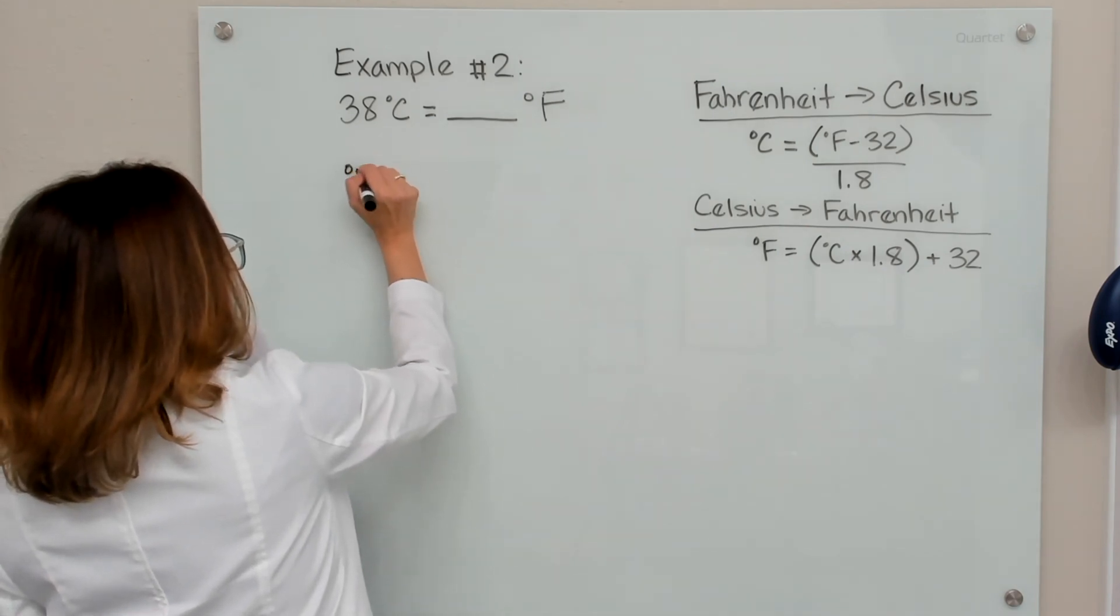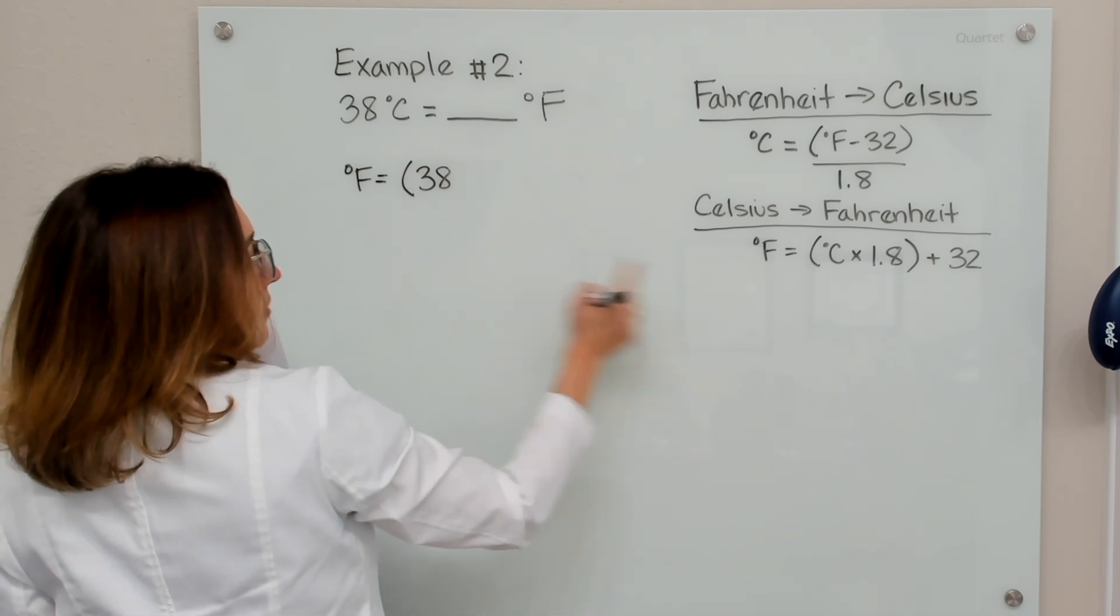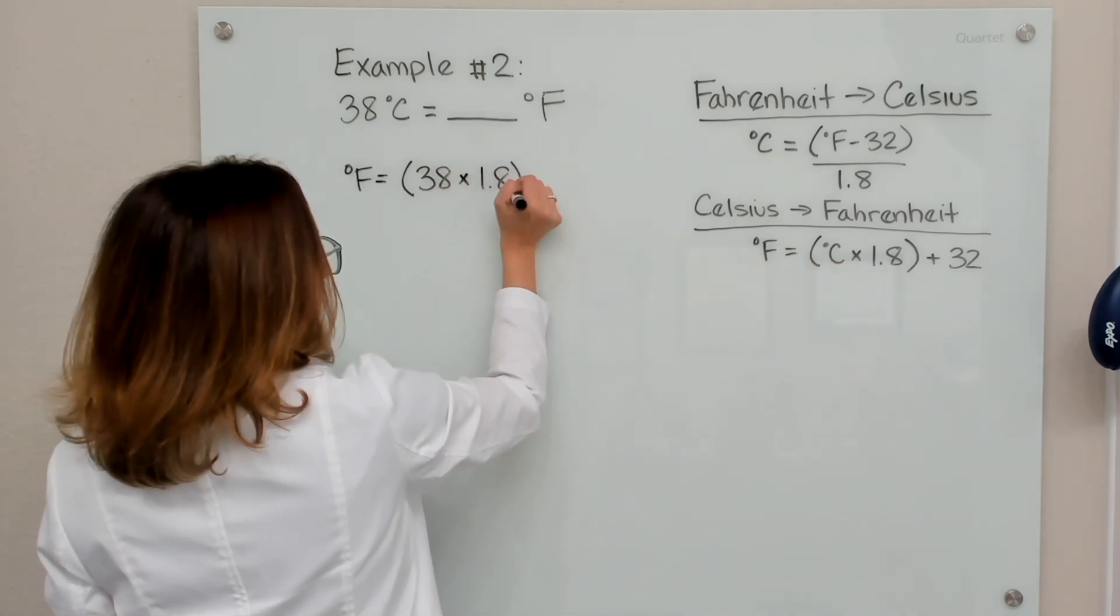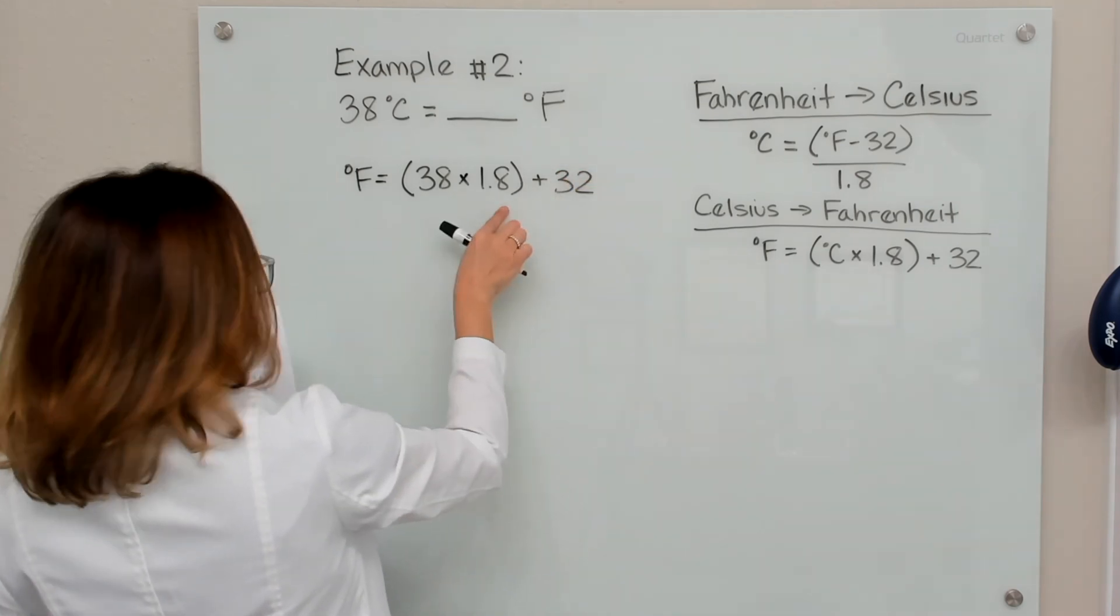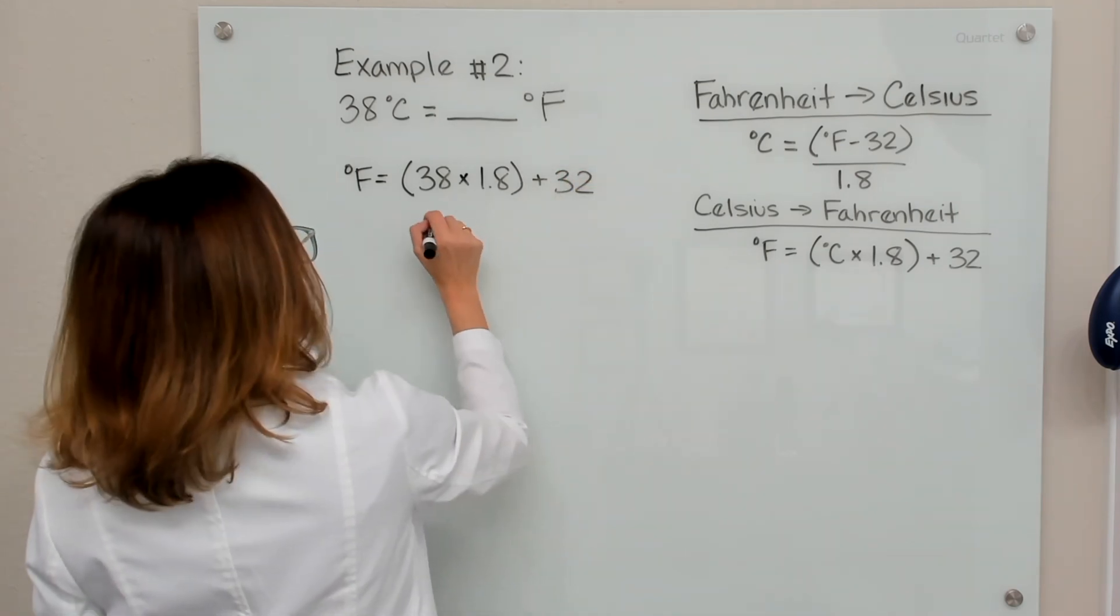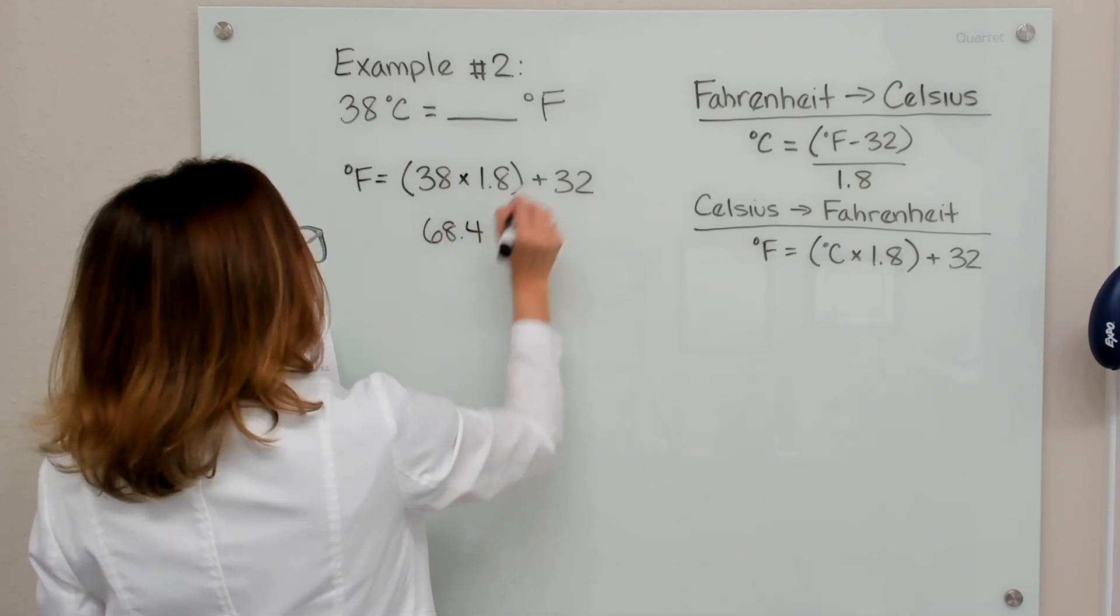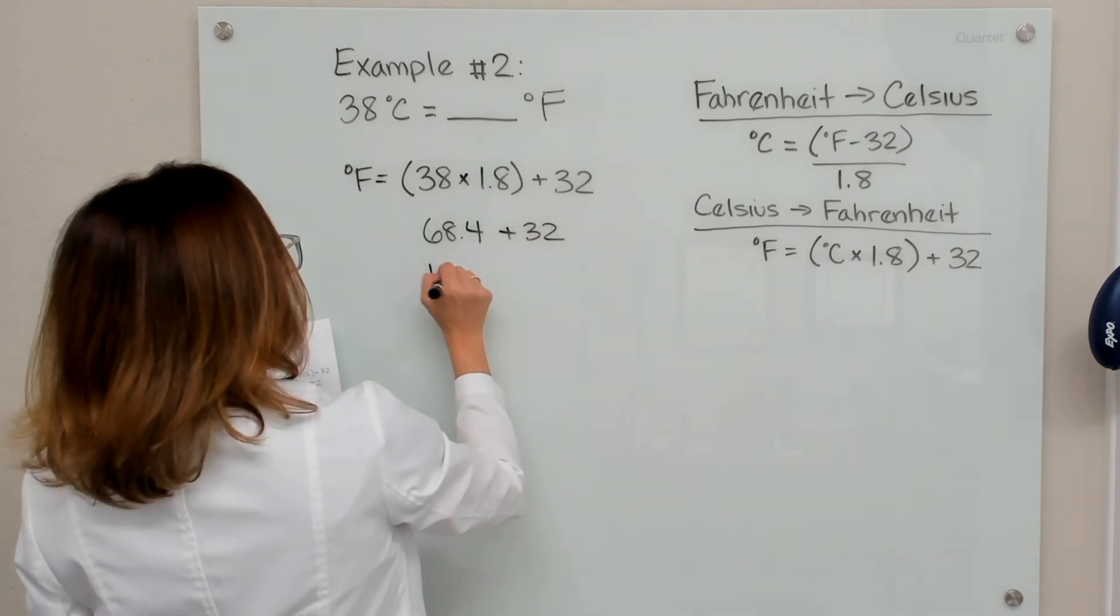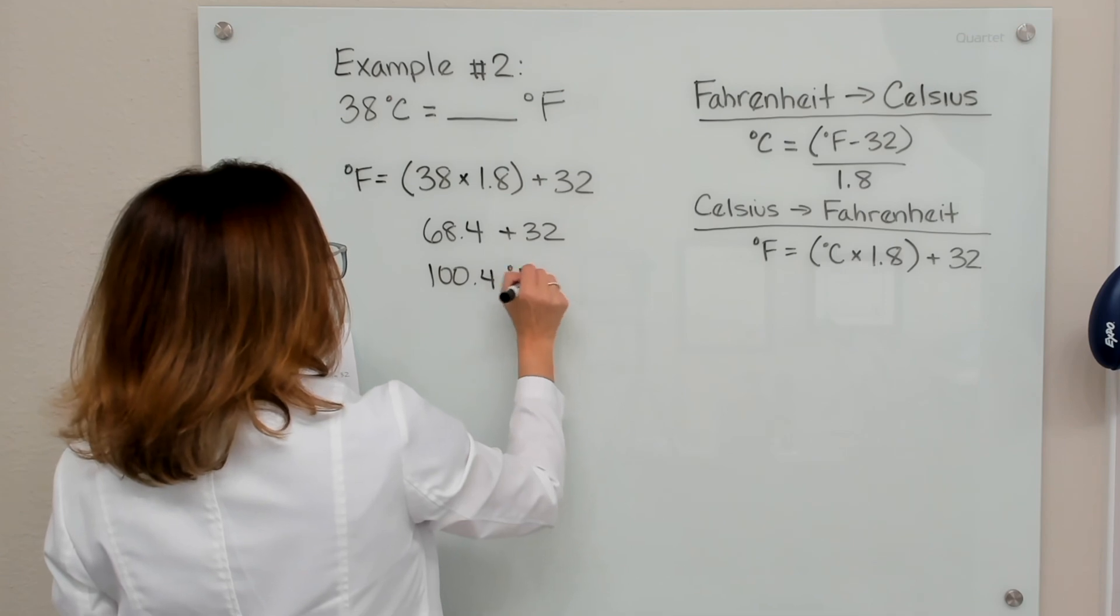So degrees Fahrenheit equals 38, so that's our degrees Celsius, times 1.8 plus 32. So we're going to solve this part first. This multiplies out to be 68.4, and then we're going to add in the 32. So we end up with 100.4 degrees Fahrenheit.